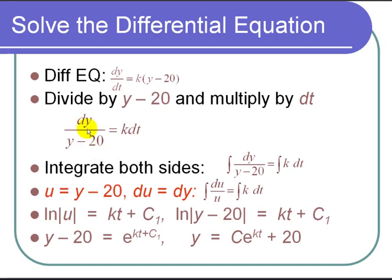Now, this has a dy and a dt. It just wants to be integrated. So we integrate. And we get the integral of dy over y minus 20 equals the integral of k dt.